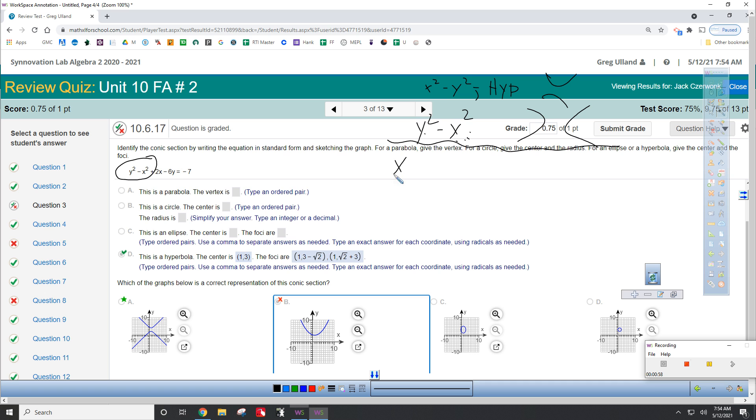Now, if it's x squared plus y squared equals a number, that's a circle. If it's x squared over a number plus y squared over a number equals one, that's your ellipse.